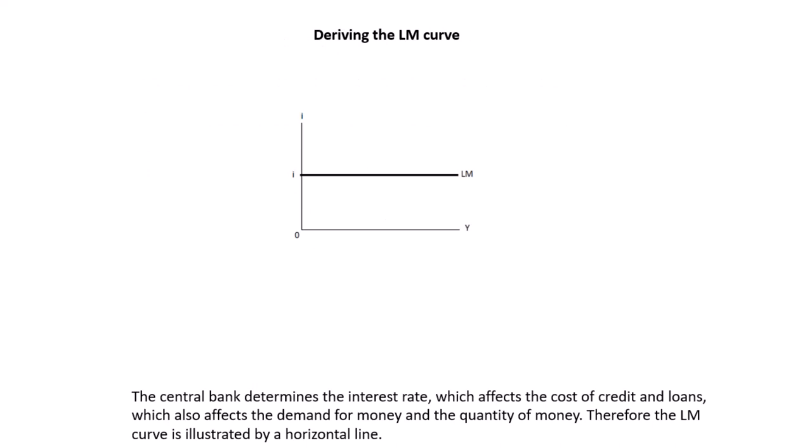The LM curve is a perfectly horizontal line. That suggests that no matter what the level of income and output is, it does not affect the LM curve. The central bank determines the interest rate, which affects the cost of credit and loans, which also affects the demand for money and the quantity of money. If the central bank increases interest rates, the cost of credit increases, the demand for money decreases, and the quantity of money available decreases.